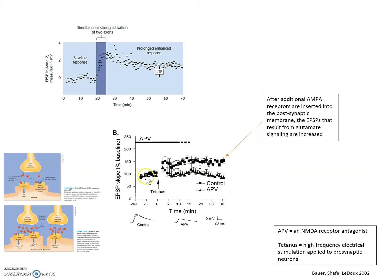And they're bigger here than here, and this is because after additional AMPA receptors are inserted into the post-synaptic membrane, the EPSPs that result from glutamate signaling are increased. Okay, now there's a lot more than just that going on, so add some additional notes.